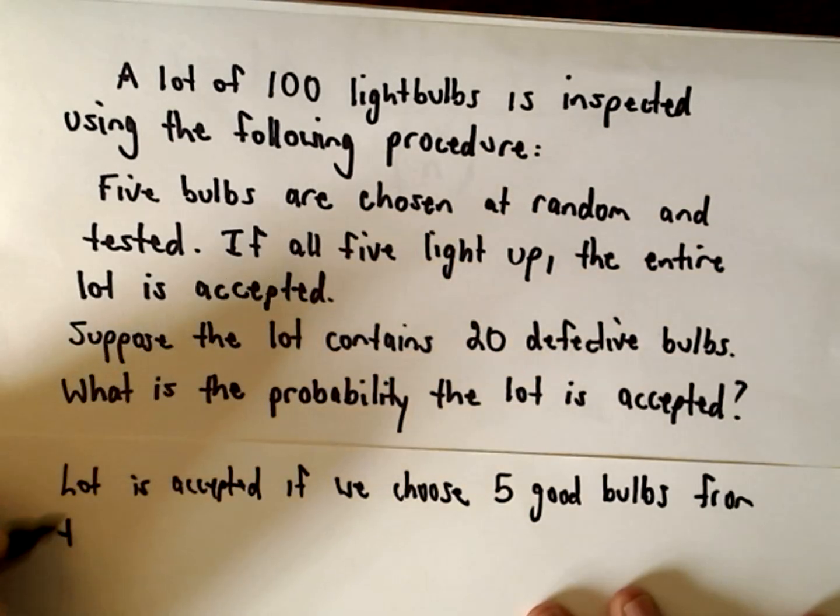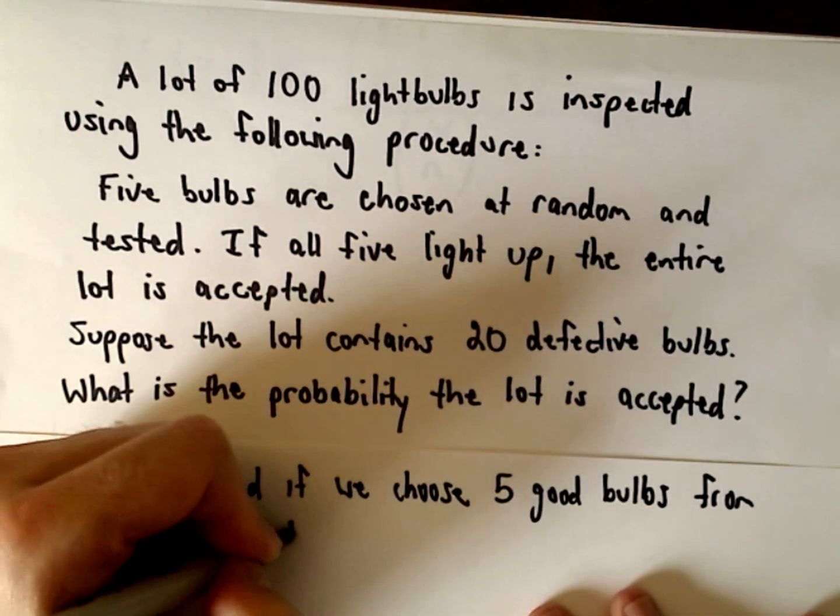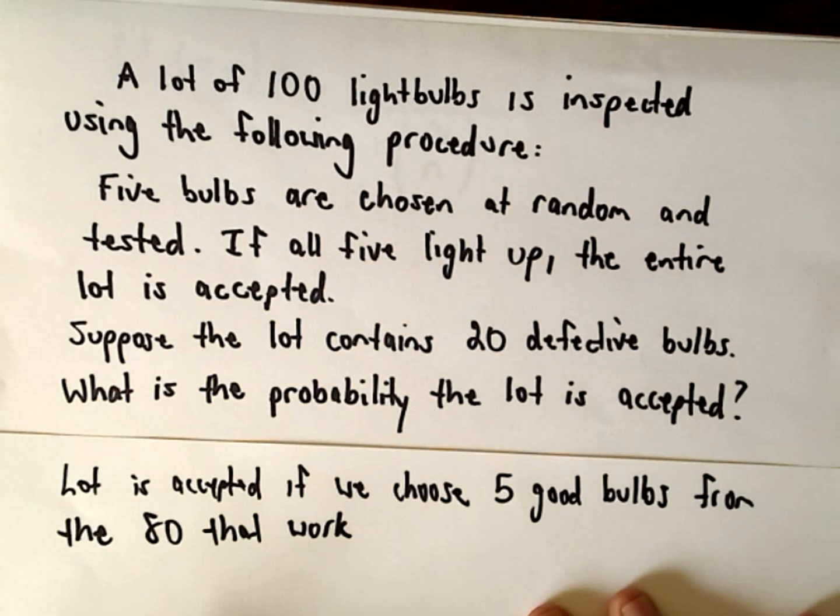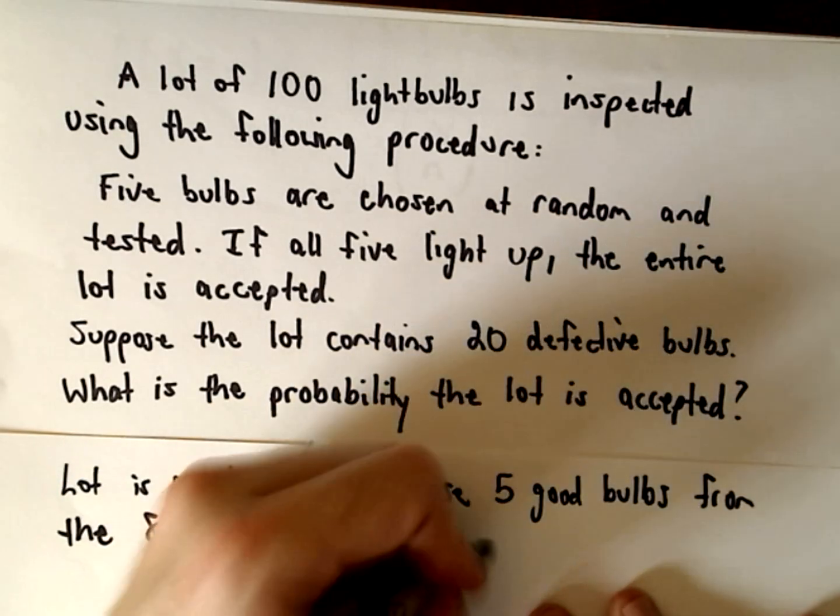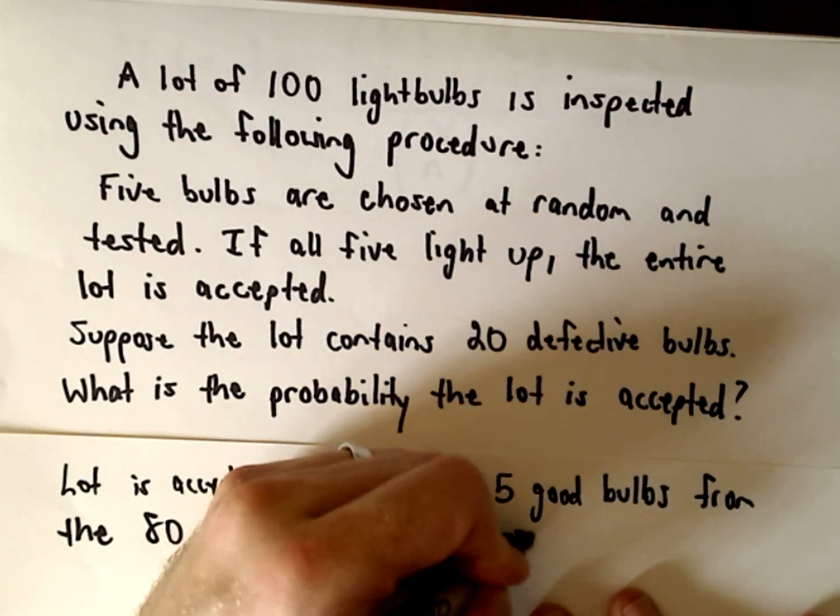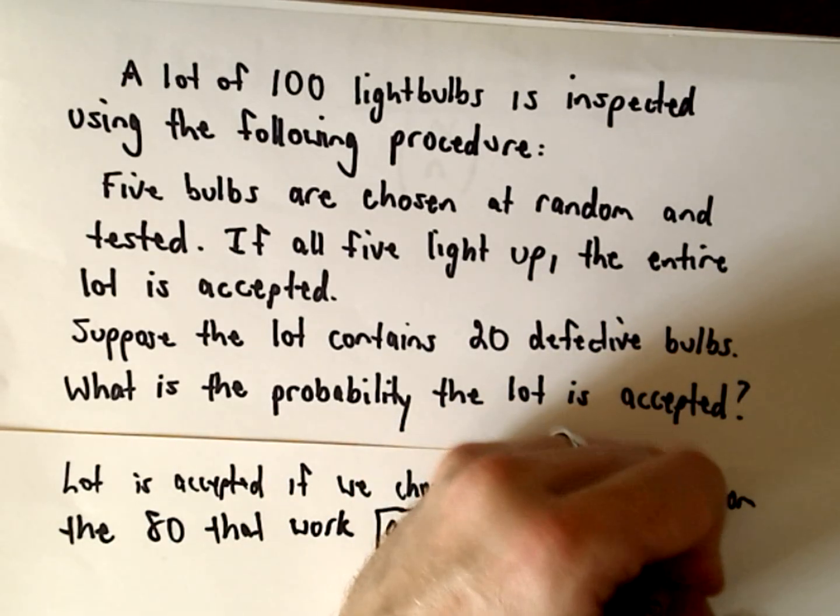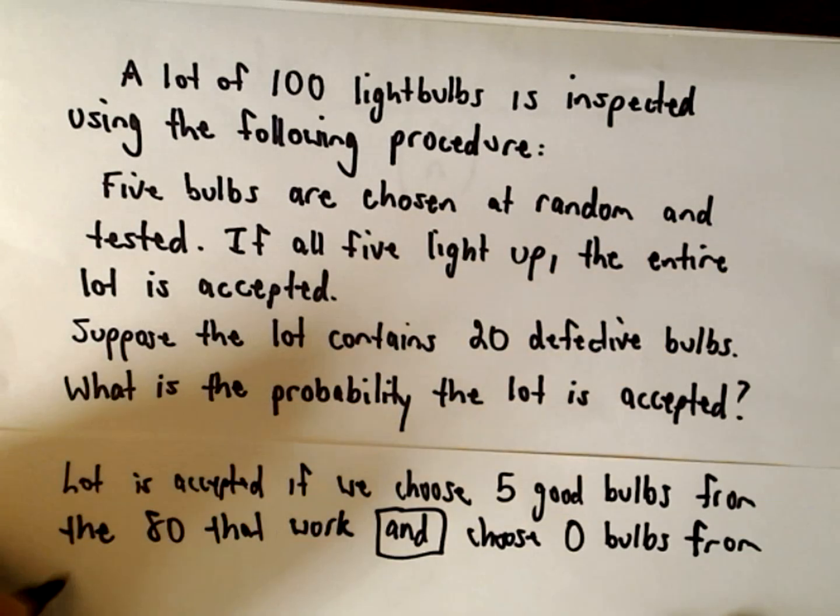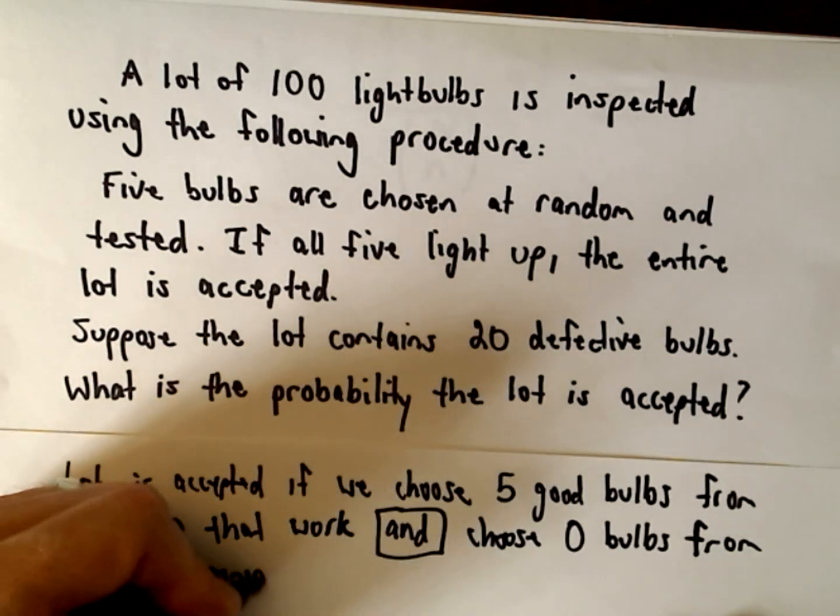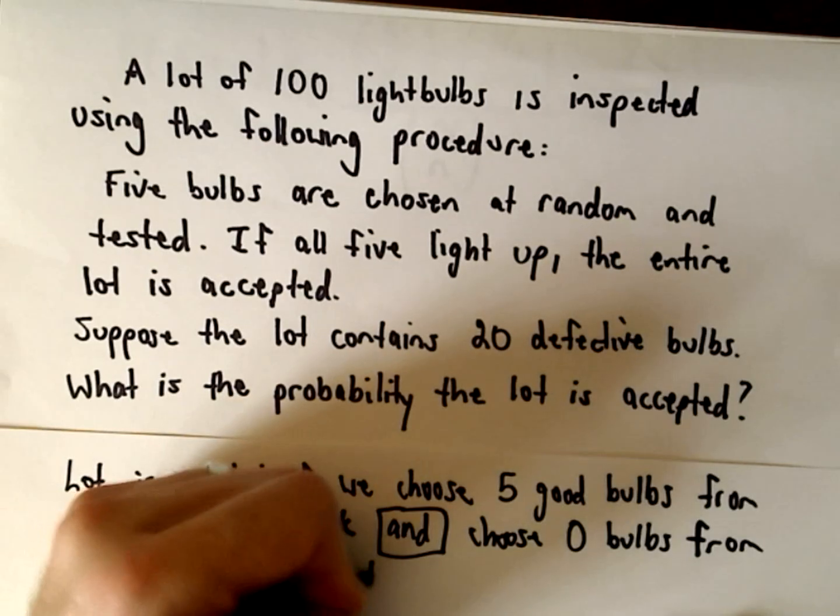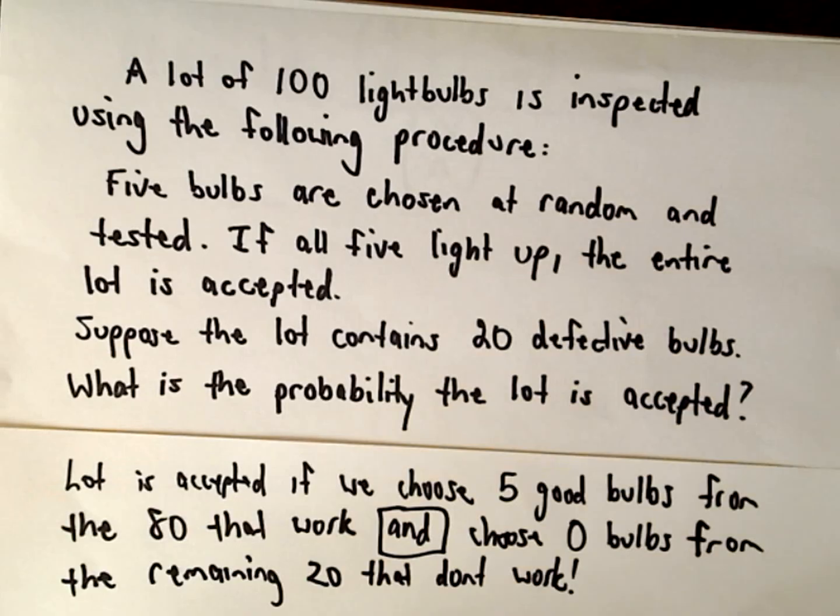Well what do we have to do? We have to choose five good bulbs from the 80 that work and we're going to choose 0 bulbs from the remaining 20 that don't work.